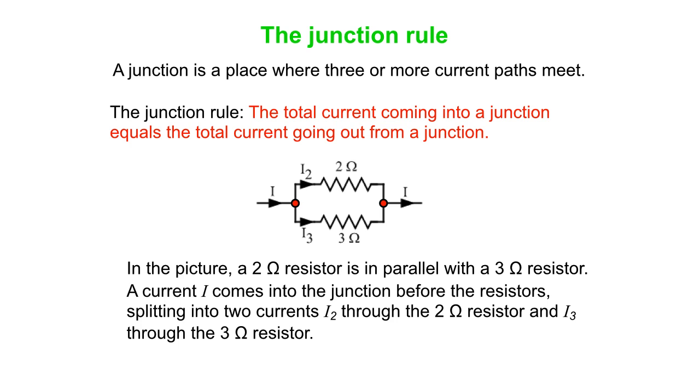And again, the current I comes in, splits into I2 through the 2 ohm resistor and I3 through the 3 ohm. So the Junction Rule tells us that I equals I2 plus I3. Note that we get exactly the same equation whether we look at the left junction or the right junction. They give us the same thing.